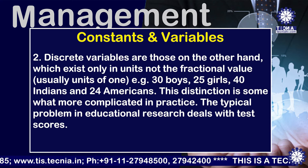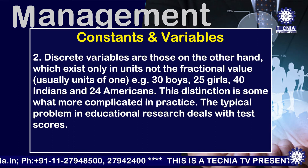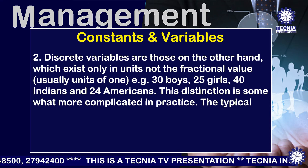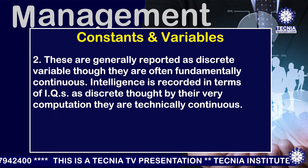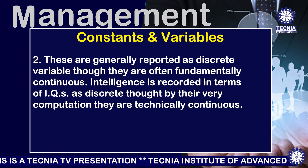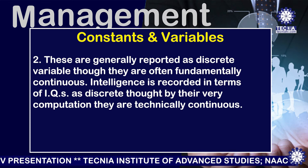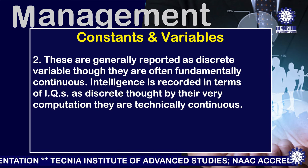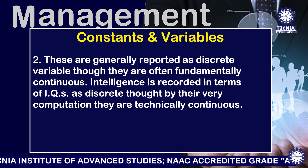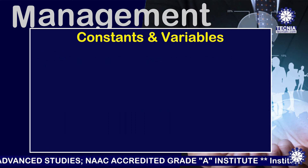This distinction is somewhat more complicated in practice. The typical problem in educational research deals with test scores, which are generally reported as discrete variables though they are often fundamentally continuous. Intelligence is recorded in terms of IQs as discrete, though by their very computation they are technically continuous.